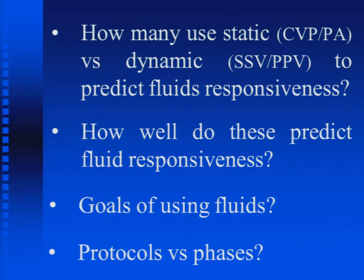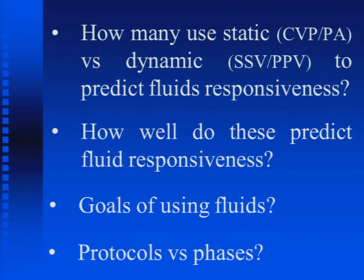Consider: my fellow puts a stroke volume variation or pulse pressure variation probe and tells me the variation is 15% — what do I do? If a PA catheter shows a wedge of five, I'll give fluids; if it's 20, I'll give diuretics. At five in the morning the resident says the patient is hypotensive — can I give 500 of Ringer's? What is it that we're trying to achieve with fluids? And can we think of this more as a dynamic process — in phases?